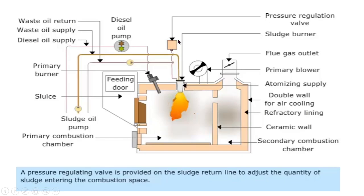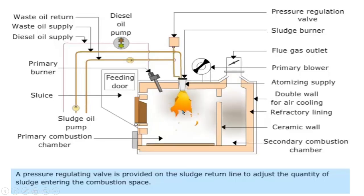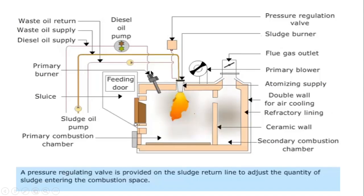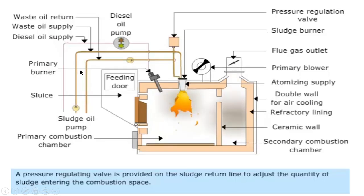There is a pressure recirculating valve which regulates the return so that a sufficient amount of sludge is continuously supplied and continuous burning is possible. The sludge comes and burns, and a small amount is returned — it maintains a back pressure so that no sudden pressure drop takes place. It maintains back pressure and then returns the sludge like this.